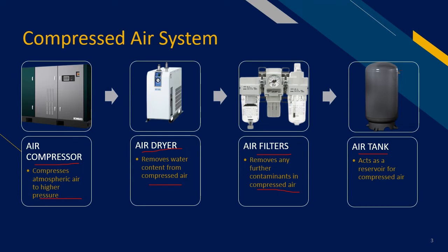The air tank is sometimes placed before the dryer. Whenever the air tank is installed before the dryer, it is known as a wet tank, as the air here still contains a lot of condensate water. If the air tank is placed after the dryer, it is called a dry tank, as the air here contains less condensate water. The air tank acts as a reservoir for the compressed air.